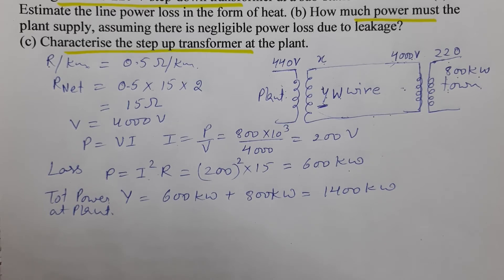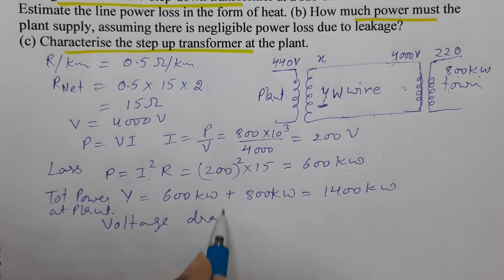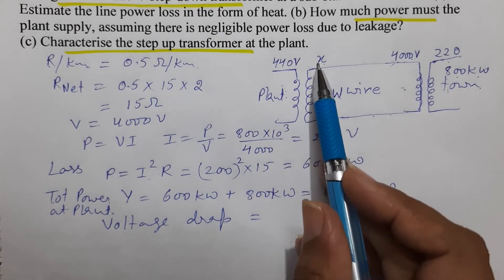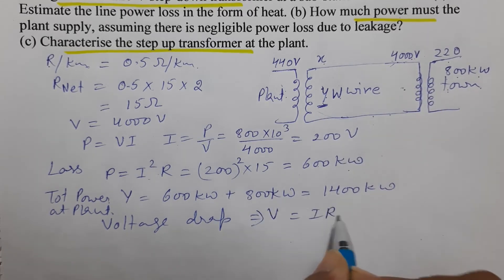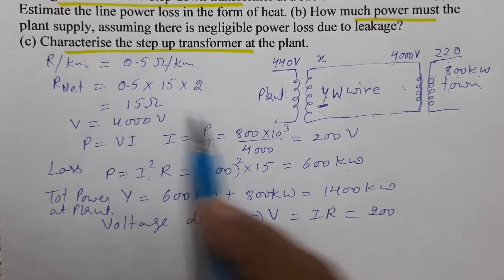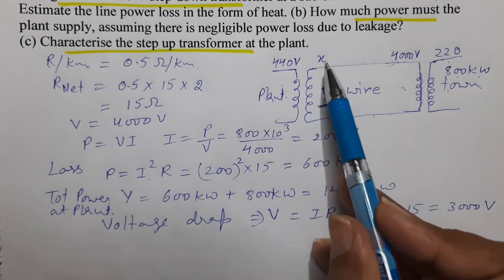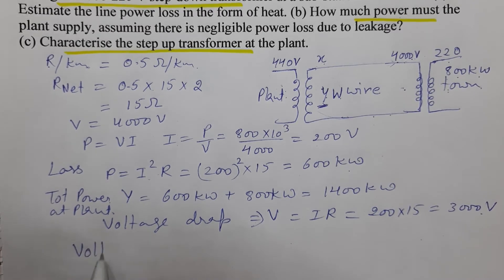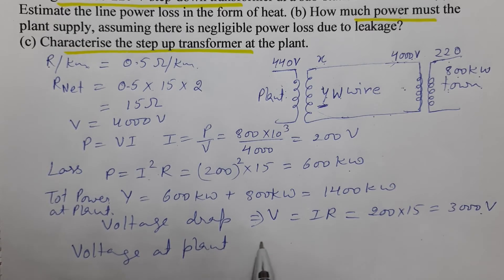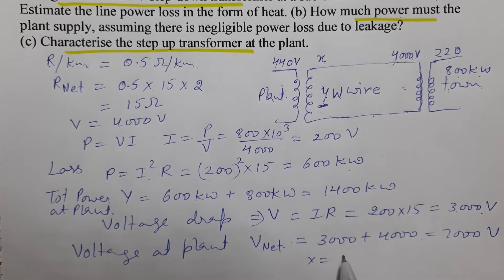Now we need to find what voltage the step-up transformer at the plant provides. First, we find the voltage drop across the wire. Using V = IR: current is 200 A, resistance is 15 ohm, so voltage drop = 200 × 15 = 3,000 volts. The step-up transformer supplies 4,000 volts to the line. Therefore, the output voltage at the plant = 4,000 + 3,000 = 7,000 volts. So x = 7,000 volts.